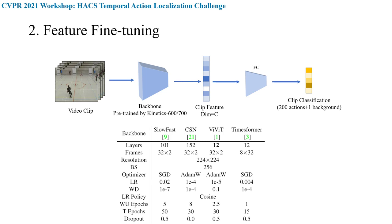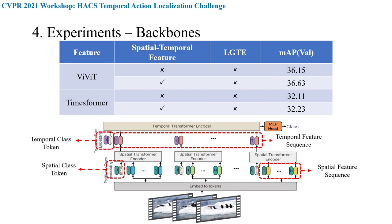The training details for four backbones are shown. Due to the different properties of the networks, their training settings are slightly different. We also explored transformer-based features for temporal action localization. For original transformer-based backbones such as ViViT, only the class token is used for action classification. However, we averaged the spatial-temporal features into spatial-temporal feature vectors and used them to perform temporal action localization, which brings likely improvement compared with class token only.